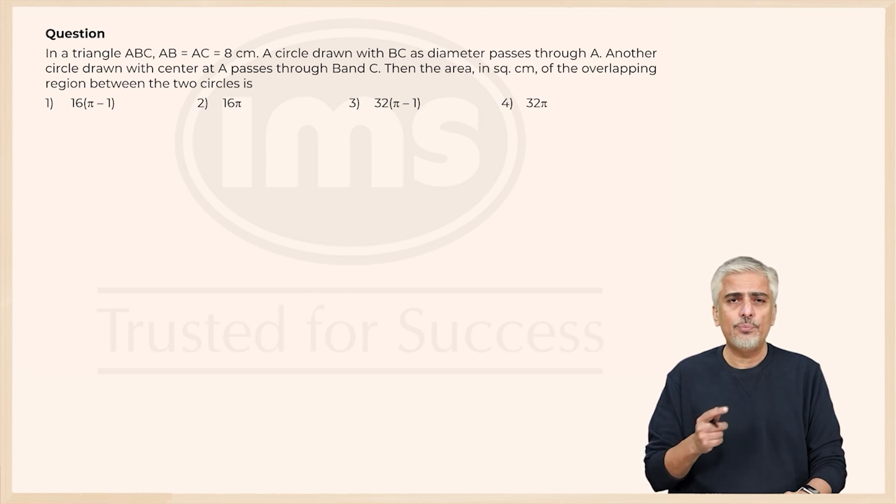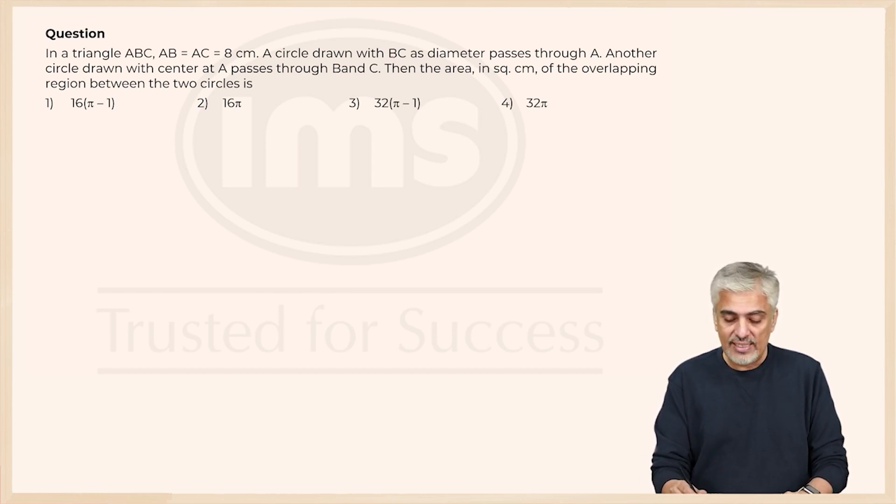So BC as diameter passes through A. At that point itself you should realize what type of triangle it is. Okay, because if BC is the diameter and the circle passes through A, which means it's a right angle triangle.